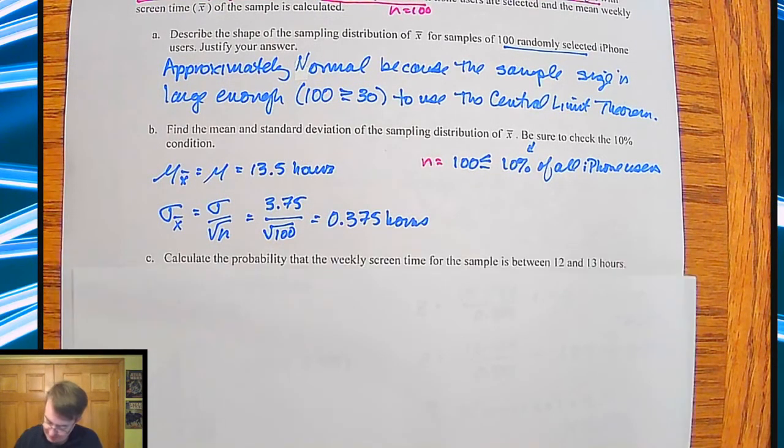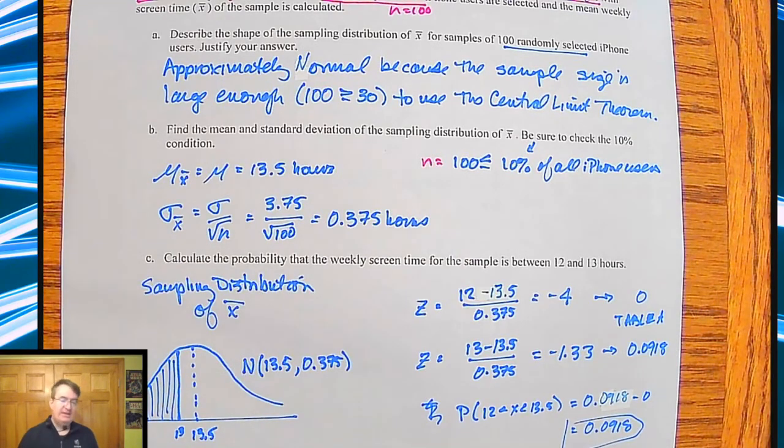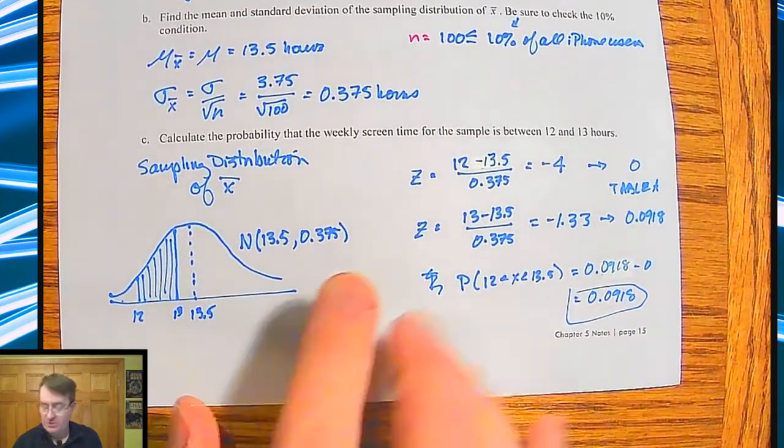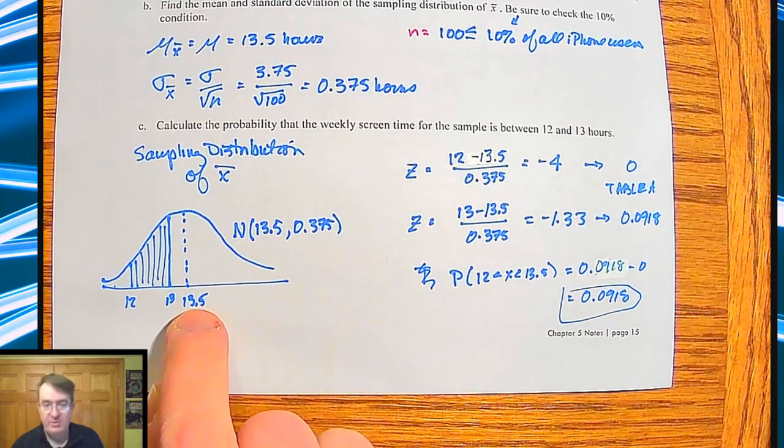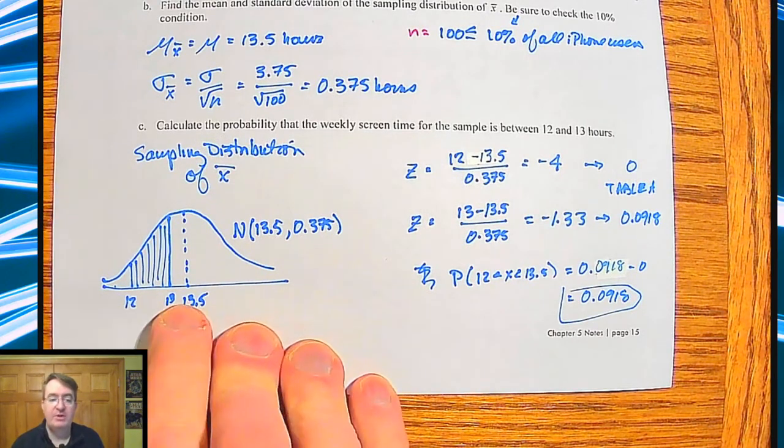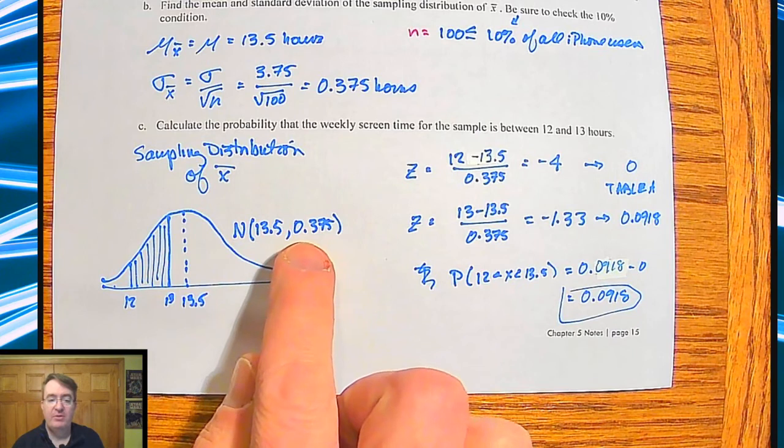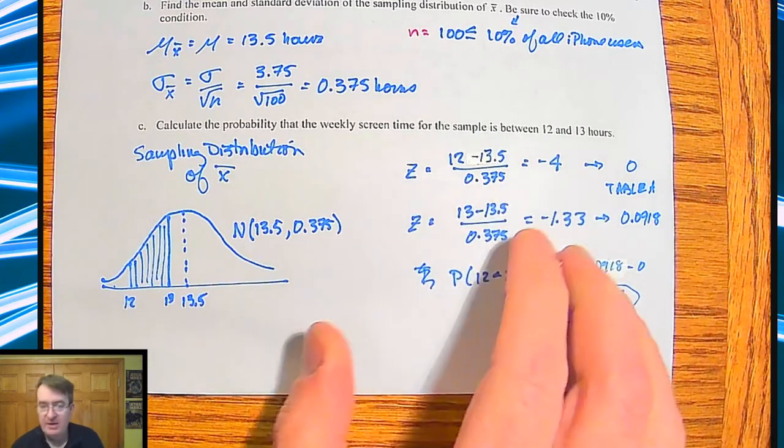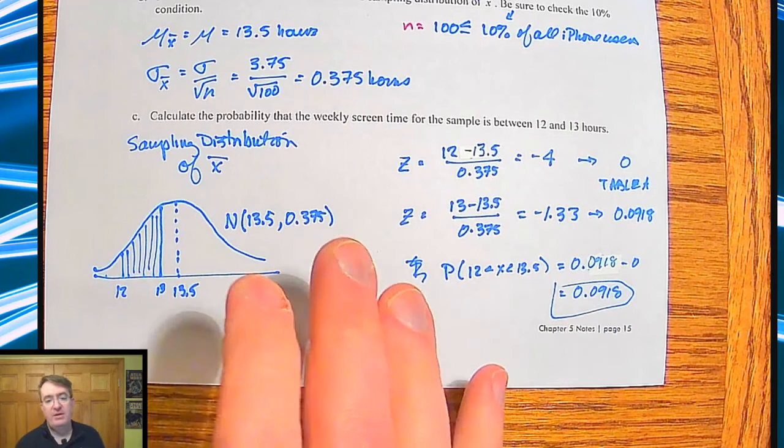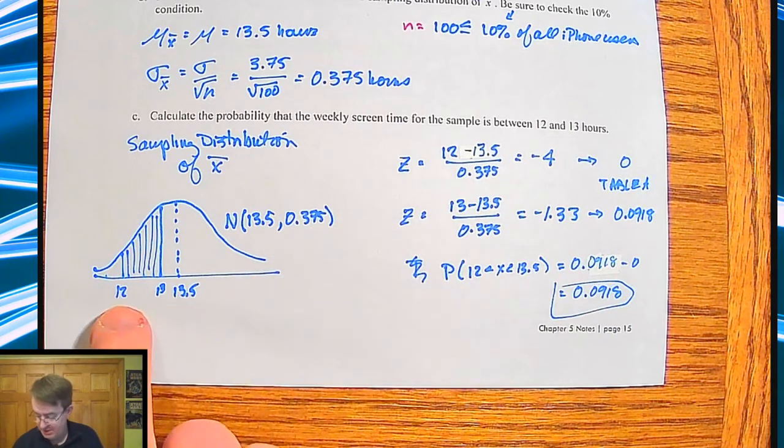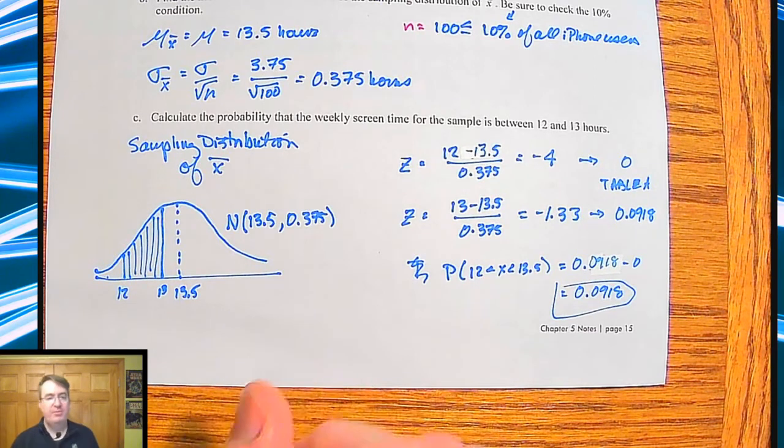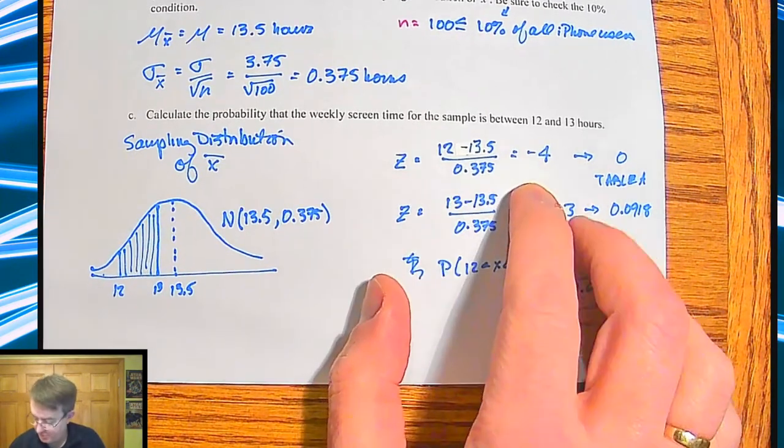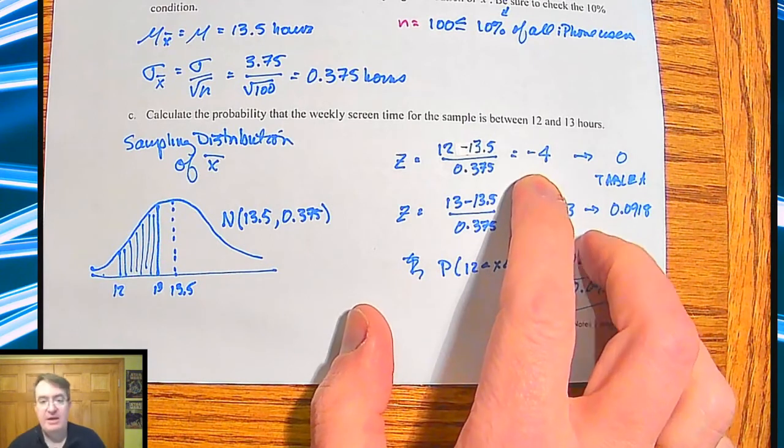And I think the last question, calculate the probability that the weekly screen time is between 12 and 13 hours. So your sampling distribution of x-bar is this. So you draw out your normal curve. We have the mean marked. We have our two indications marked. We have our little normal set there. And then we calculate out Z. So we're going to go into the idea that you're doing this from table A. So we calculate out a z-score for 12. Well, actually, you have to calculate the z-score for both.